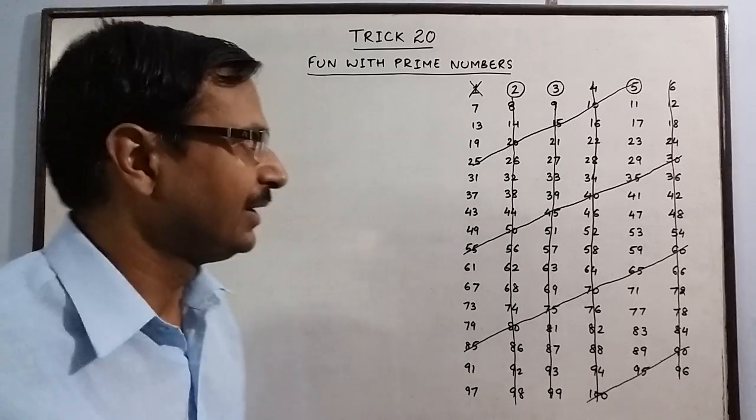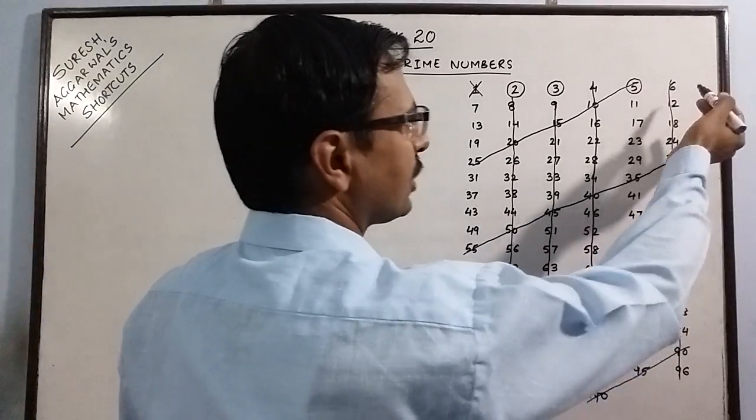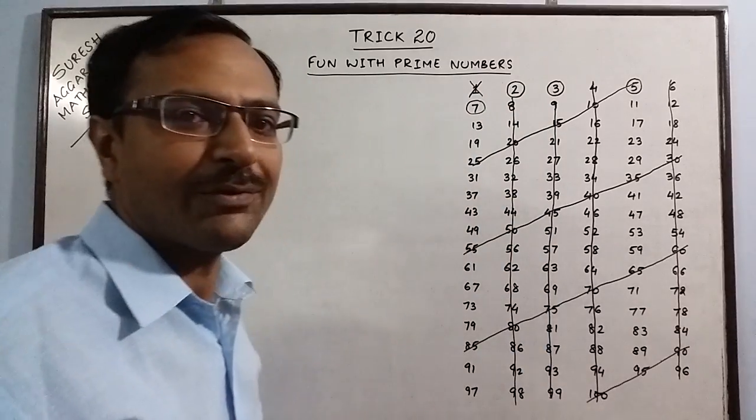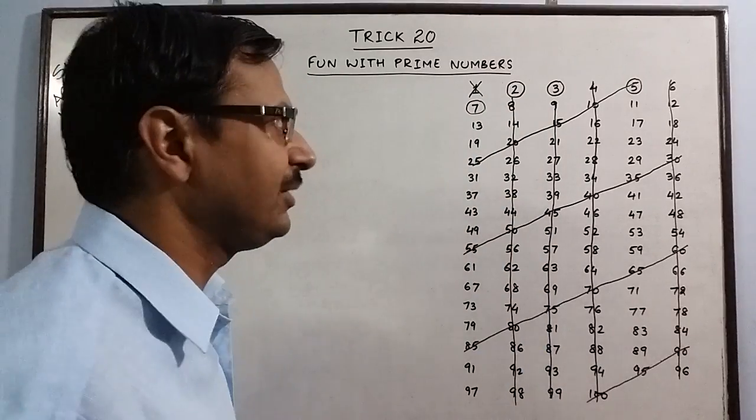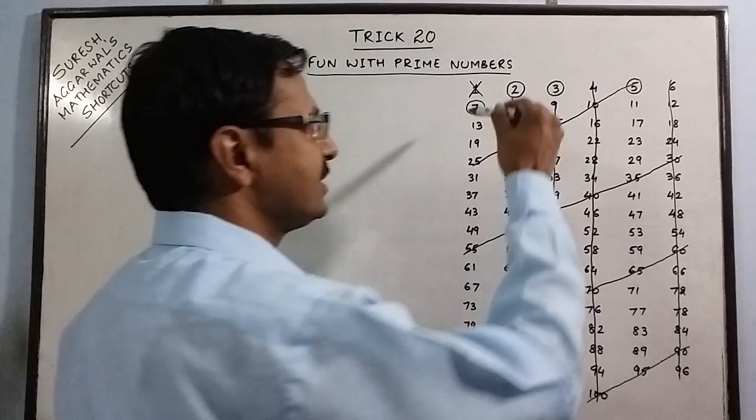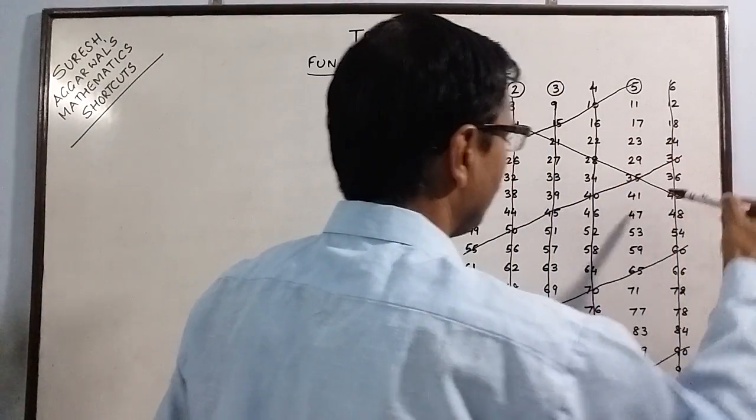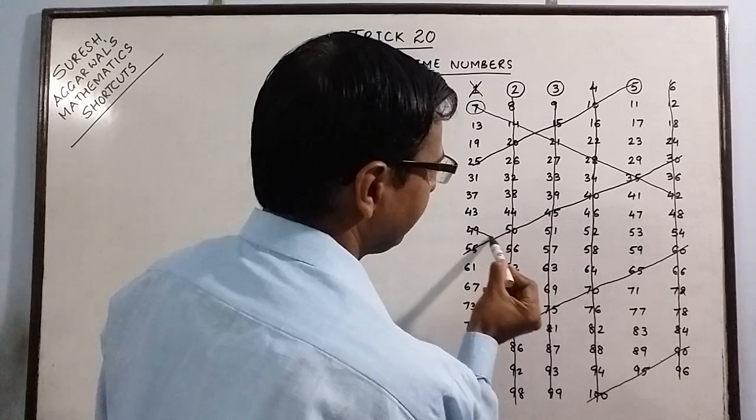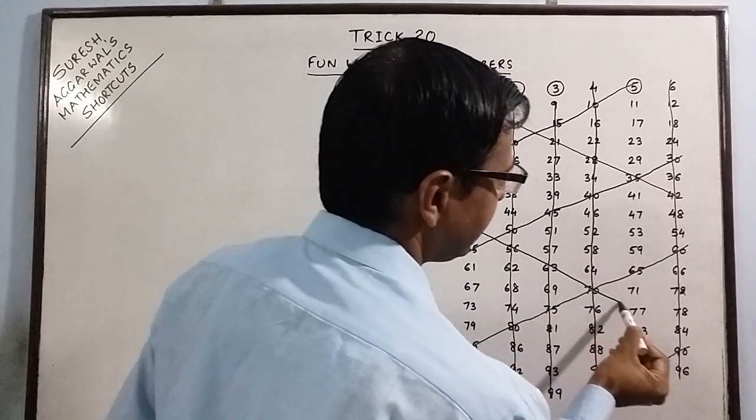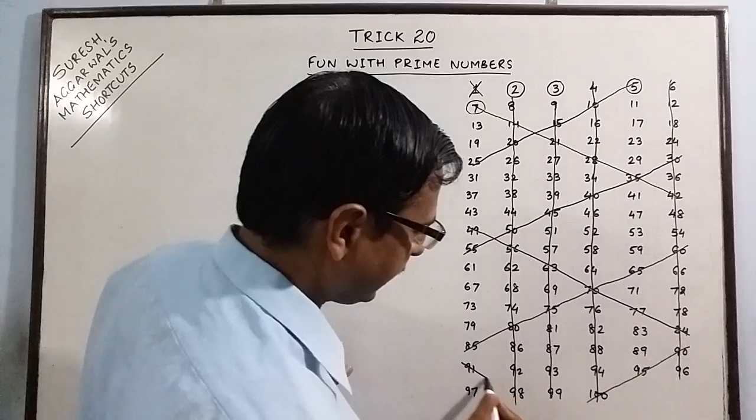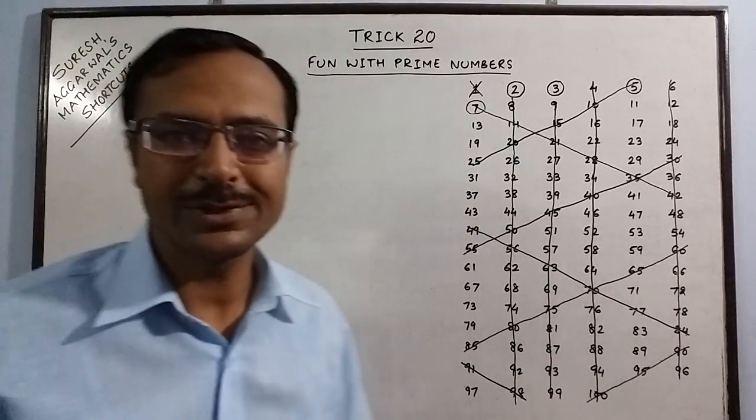Now the last step. We move on. 6 is already struck off. Now move on to 7. Again for finding the multiples of 7, we have to move diagonally. 7, 14, 21, 28, 35, 42, 49, 56, 63, 70, 77, 84, 91 and 98. This is all folks.